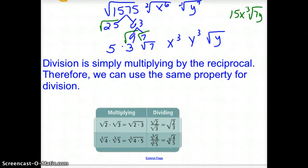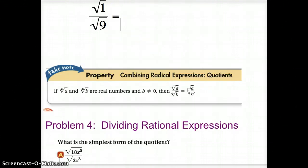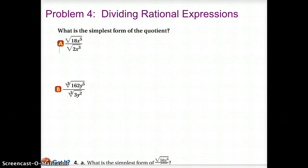With division, we are simply multiplying by the reciprocal, so these same properties work. With multiplication, we said if they are both square roots or both cube roots we could put them together. With division, we can do the same thing — if they have the same kind of index, we can put them together into one root symbol. If we have the square root of 1 over the square root of 9, we can think of it as the square root of 1/9. Either way we get the same answer. This works with all roots as long as they have the same index, so we can put it together as a single fraction, which allows us to do some simplifying before dealing with the root symbol.